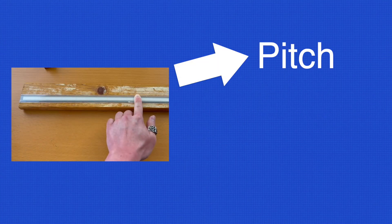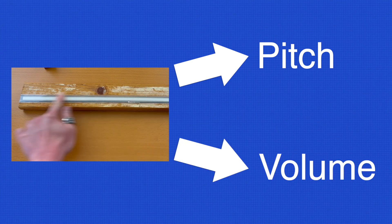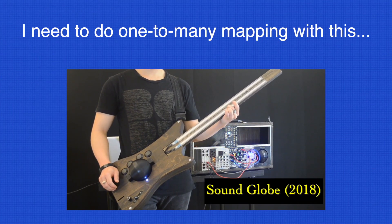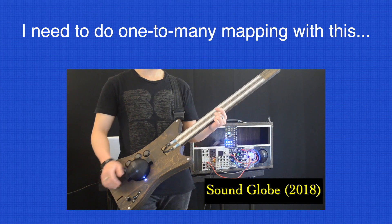As you experiment with a sensor, go beyond just the raw data and explore what you can do with the speed and acceleration of data changes. And even if you have a finished instrument, chances are one-to-many mapping will add more expressivity to your project.